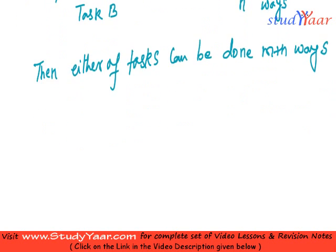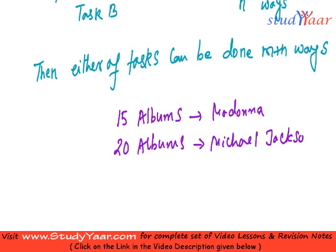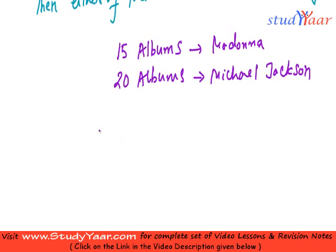For example, let us suppose you have 15 albums of Madonna and 20 albums of Michael Jackson, and you have to choose one of them. Then how many options do you have? You have 20 plus 15 options to choose one album.